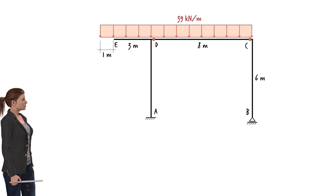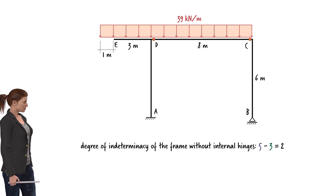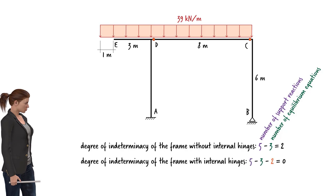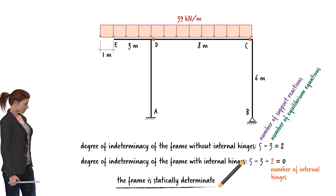To analyze the frame, first we need to determine whether it is a statically determinate or indeterminate structure. Please feel free to pause the video and see if you can determine the degree of indeterminacy of the system. If the beam connections at C and D were rigid, the frame would have been indeterminate to the second degree, since we have five unknown support reactions and only three static equilibrium equations. But for each internal hinge, we can subtract one from the degree of indeterminacy of the system. Since we have two hinges, we get zero for the degree of indeterminacy, which means the frame is in fact statically determinate. So we can analyze it using the static equilibrium equations.